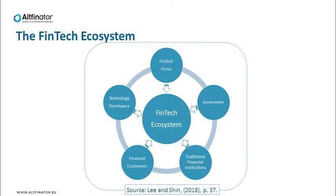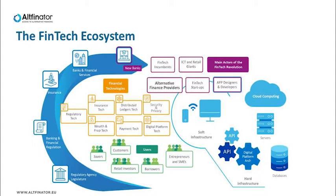In the fintech ecosystem, we see five main actors: the fintech firms, those who produce and apply these technologies; technology developers, who design and develop the coding and technology used in these transactions; the traditional financial institutions, such as banks and financial services firms, that apply these technologies into their processes; government, which is in charge of regulating the whole system; and finally, financial customers — individual users saving, investing and making payments, as well as firms that use banking and financial services in their day-to-day transactions.